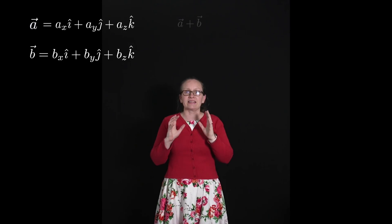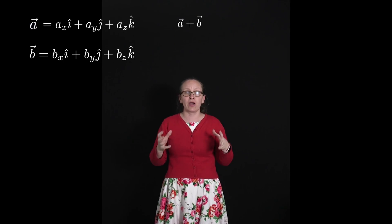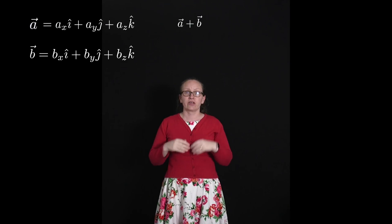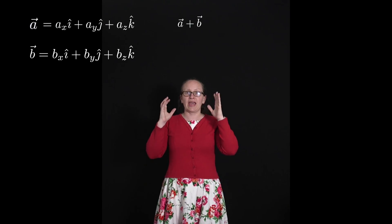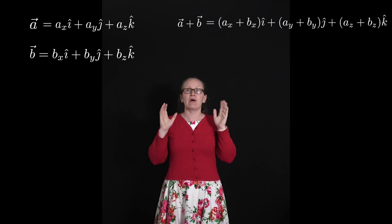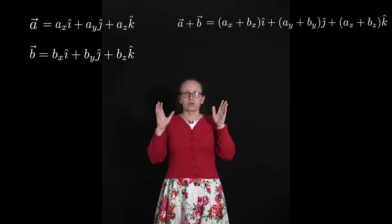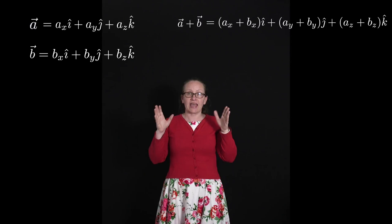First of all, we're going to try adding these two vectors together. In this case, we just add the components in each direction. So a plus b is equal to (ax plus bx) times i plus (ay plus by) times j plus (az plus bz) times k.